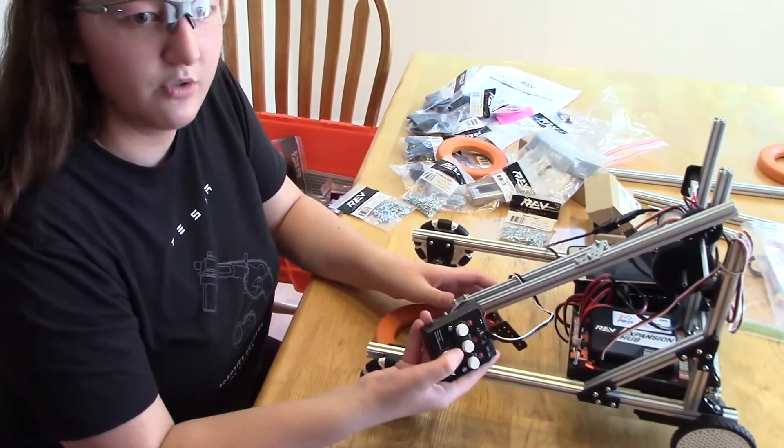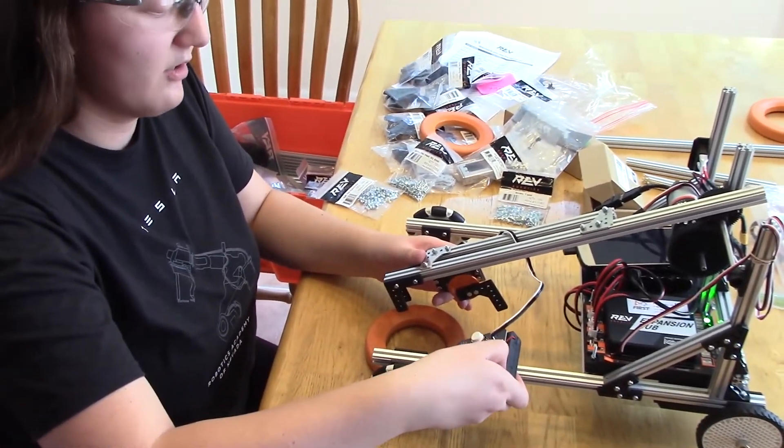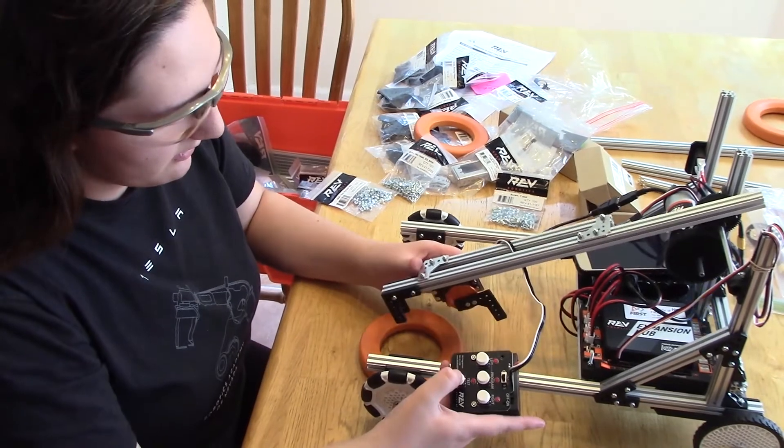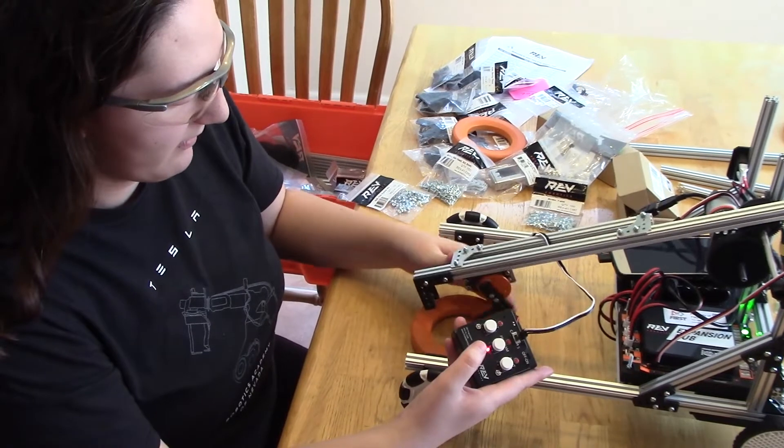I'm going to demonstrate with the servo controller here from the FTC Starter Kit. So you can see here, that's the range of motion that it has. I'm just going to demonstrate real fast.